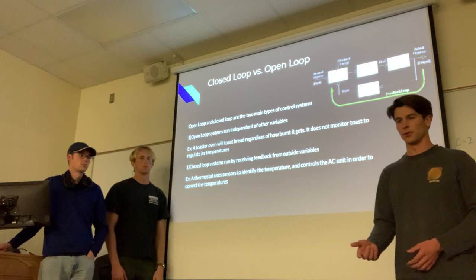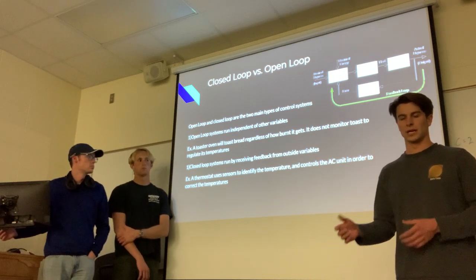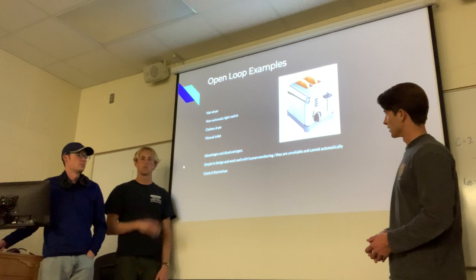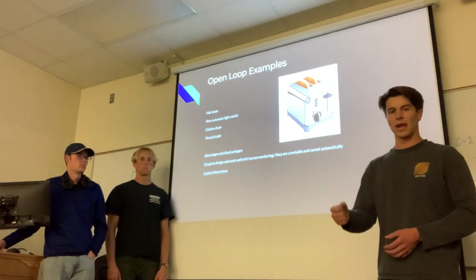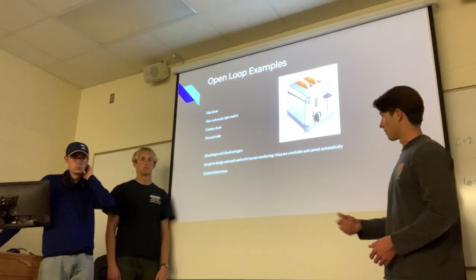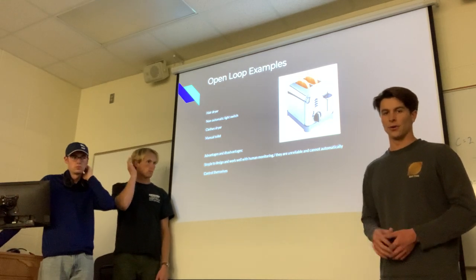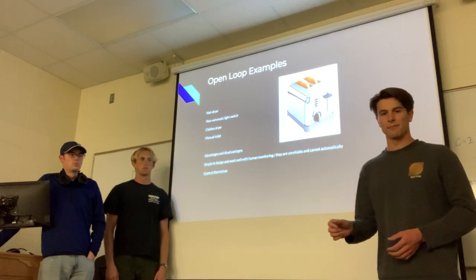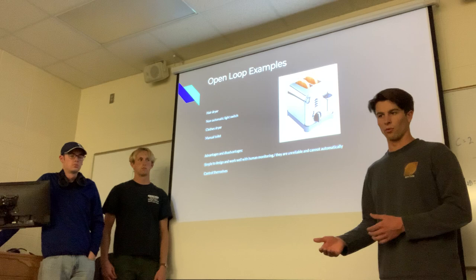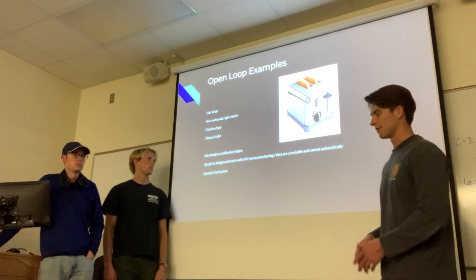For example, a thermostat is going to measure the temperature of a room and send a signal to the AC unit in order to control the temperature of that room. A couple of examples of open loop systems are hair dryers, because you have to manually turn one on for it to function, and as soon as you take your finger off, it turns off. A non-automatic light switch, because the light will turn on independent of whether it's dark or light outside — you have to control that. Clothes dryers run on time and will turn off even if clothes are still wet. And a manual toilet is something you have to manually flush.